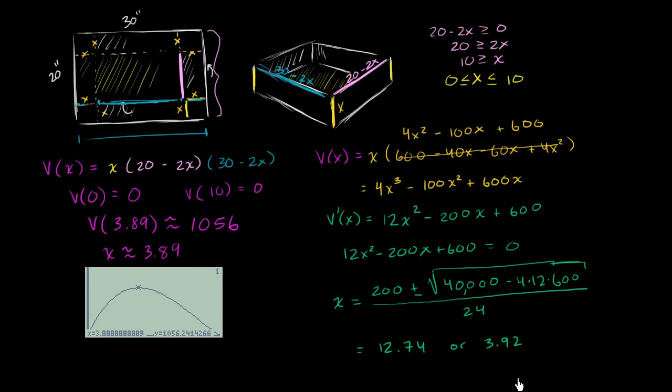Now which of these can I use? Well, x equals 12.74 is outside of our valid values for x. If x was equal to 12.74, we would cut past, we would completely cut past. The x's would start to overlap with each other. So x cannot be 12.74. So we get a critical point at x is equal to 3.92.